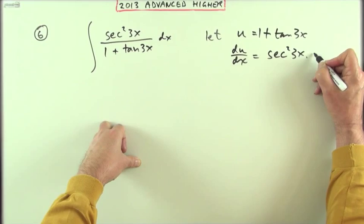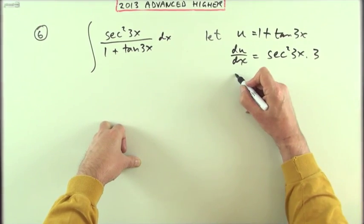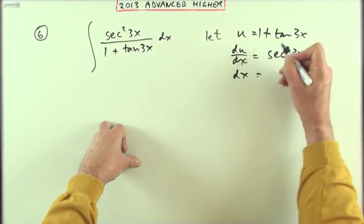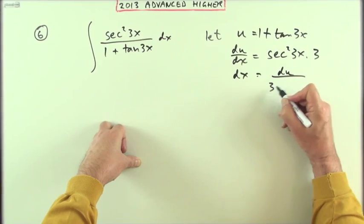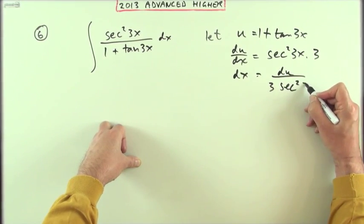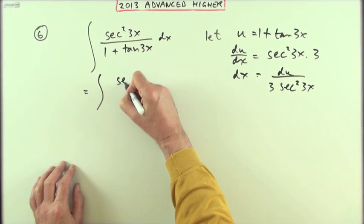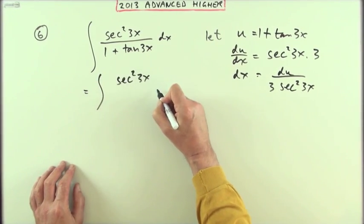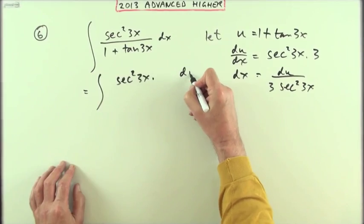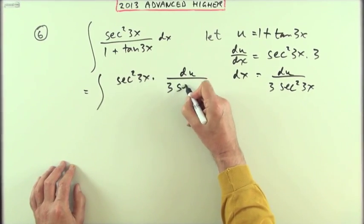In which case du by dx will be sec squared 3x times the 3, so that the dx will equal du over 3 sec squared 3x. And then substitute it in.